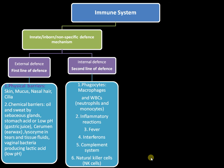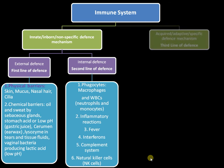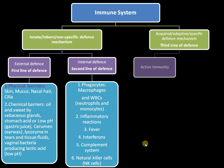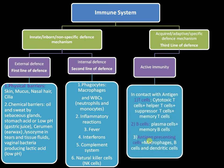Once a pathogen has entered the bloodstream and overcome the first and second lines, the second mechanism — acquired immunity, also called adaptive immunity or specific defense mechanism — comes into play. This forms the third line of defense. Once bacteria overcome all previous lines, they face the major commanders of the immune system with high specificity, forming active immunity.